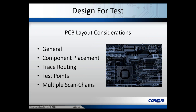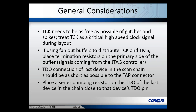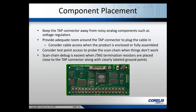For PCB layout considerations: TCK needs to be as free as possible from glitches and spikes — treat TCK as a critical high-speed clock signal and tag it as a critical net. If using fan-out buffers to distribute TCK and TMS, place termination resistors on the primary side of the buffer, i.e., the signals coming from the JTAG controller. The TDO connection from the last device in the scan chain should be as short as possible to the TAP connector, with a series damping resistor placed close to that device's TDO pin.